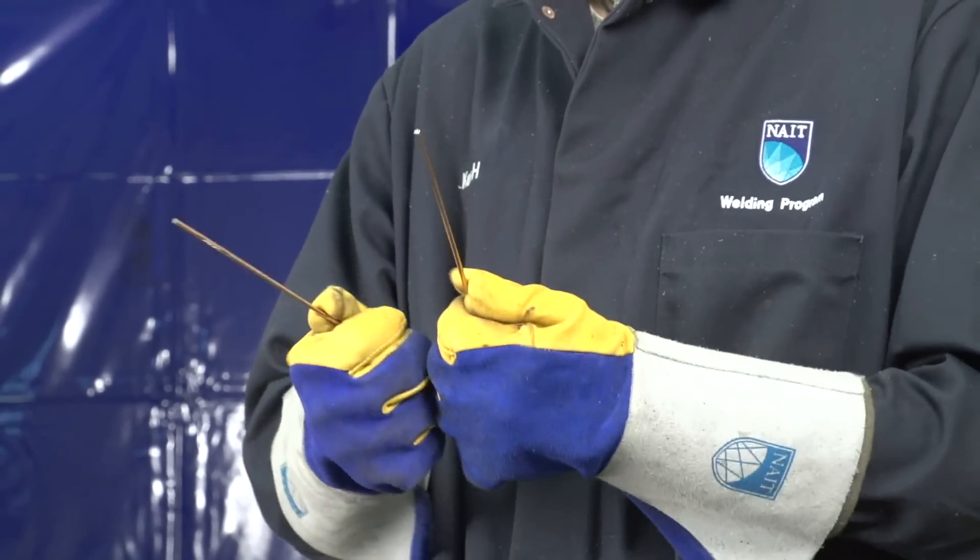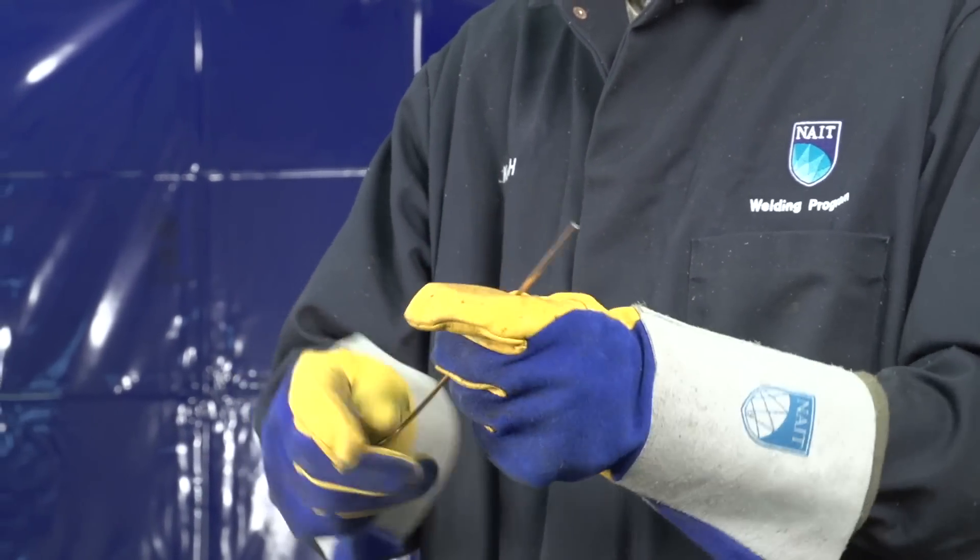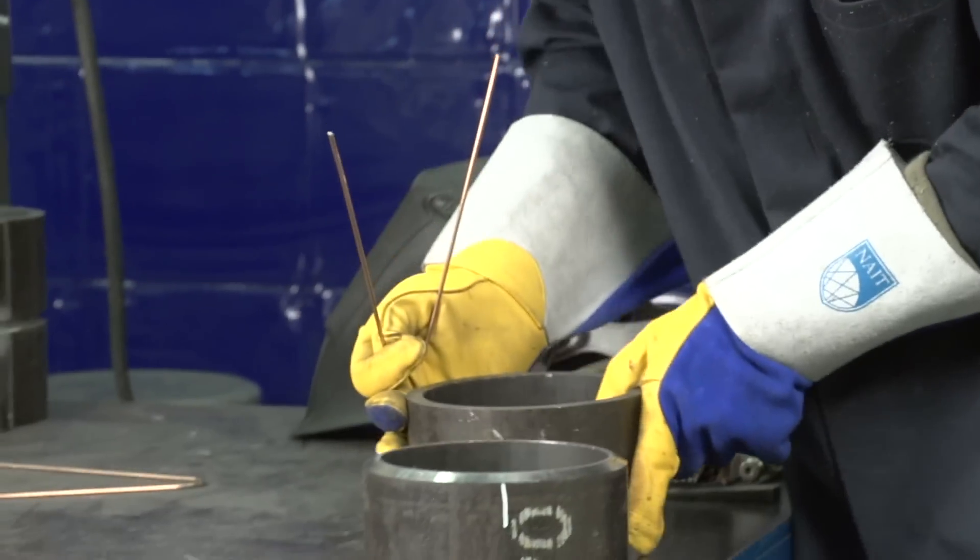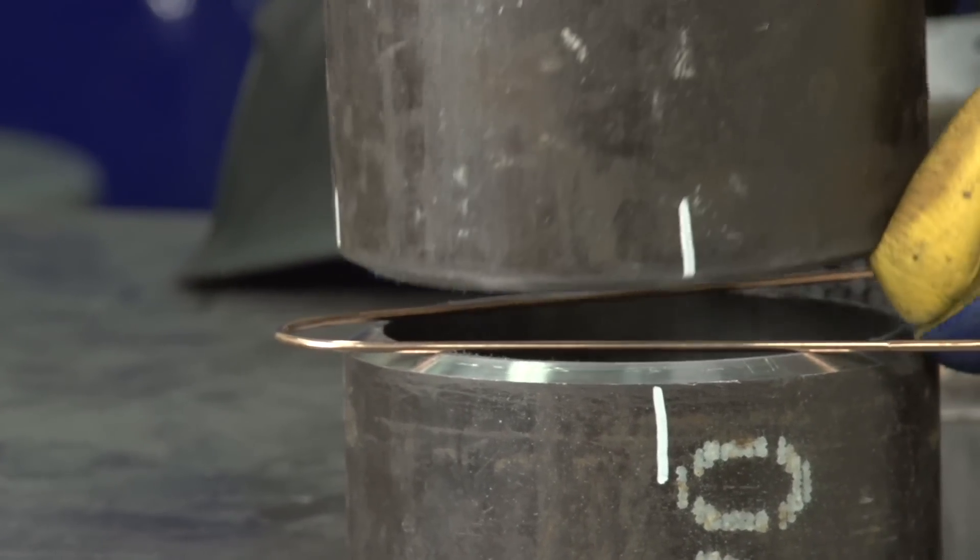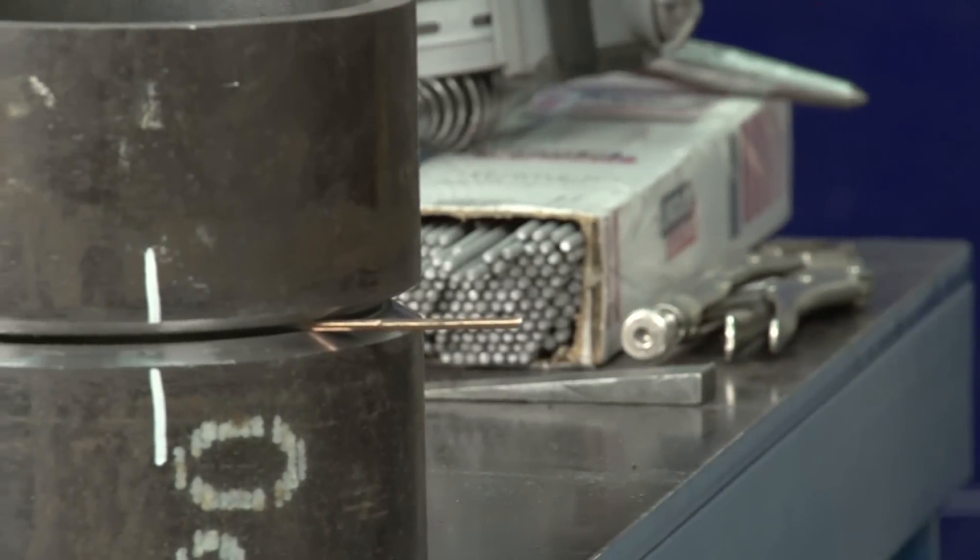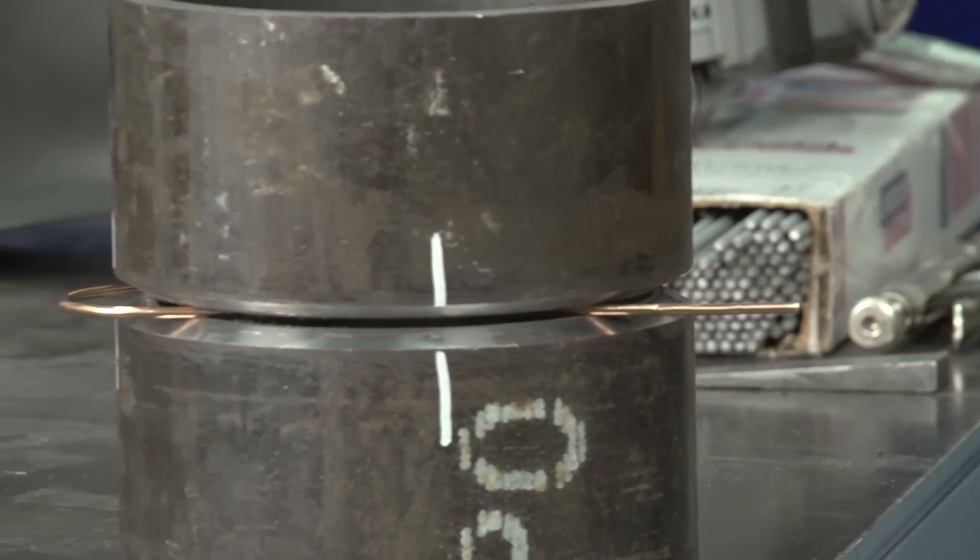The spacer is constructed by bending a short length of wire, usually 3/32nd to an eighth of an inch, resulting in a root gap approximately equal to the root face. Once the spacer is placed as shown, the first tack is usually positioned at the chalk mark.